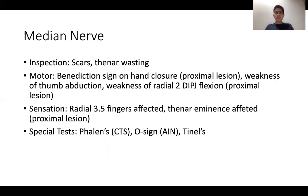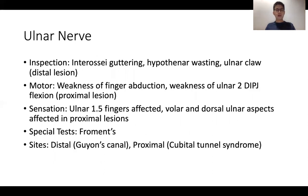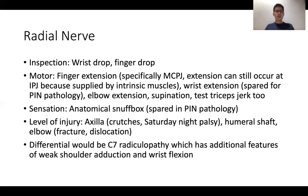For isolated nerve palsies of the hand, first ascertain whether this is truly a single nerve palsy or part of something bigger such as a root or plexus problem. Then elucidate the level of the lesion using inspection, motor examination, sensation, and special tests. This approach applies to both ulnar and radial nerve palsies.